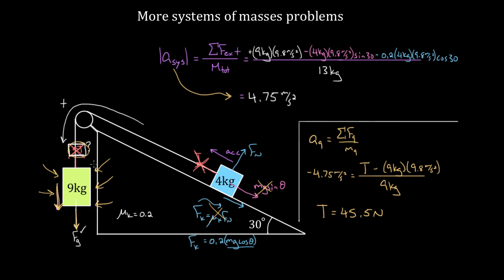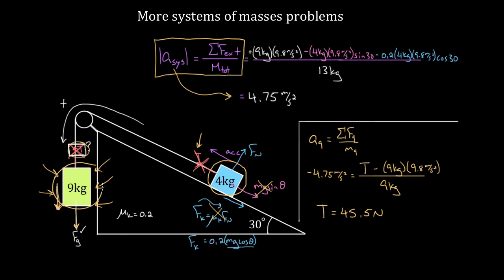To recap: treating a system of masses as if they were a single object is a great way to quickly get the acceleration of the masses in that system. Once you find that acceleration, you can then find any internal force by using Newton's second law for an individual box alone — just like we did here to find the tension of 45.5 Newtons.